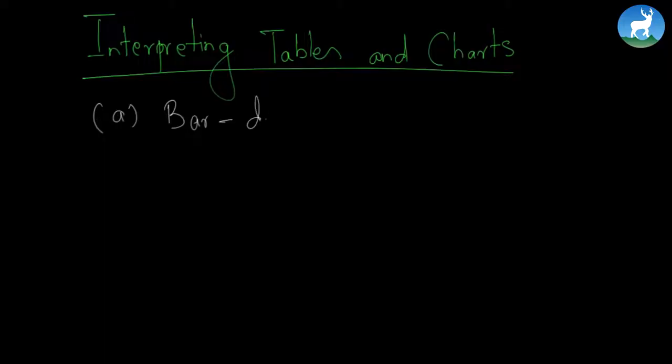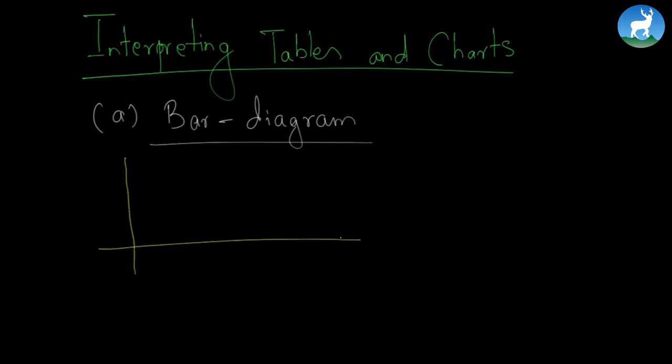So let's begin. We are going to study about interpreting tables and charts. As we all know, there are four different kinds of tables and charts and we are going to study them one by one.